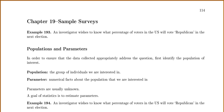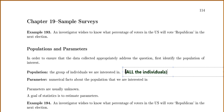First we need to know about populations and parameters. In order to ensure that our data appropriately addresses our question, we would first identify the population of interest. A population is the group of individuals we are interested in — specifically, all the individuals we are interested in. Parameters are usually unknown because it's usually difficult to collect data on all individuals; there are usually just too many people.